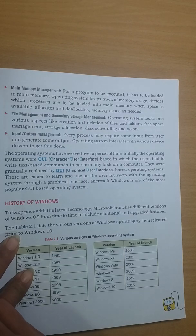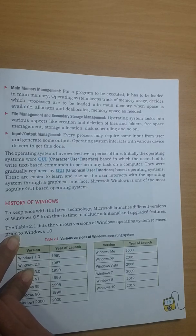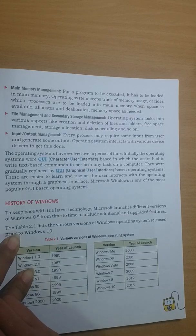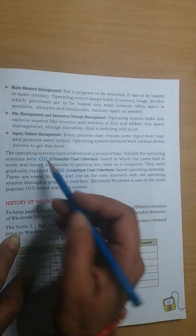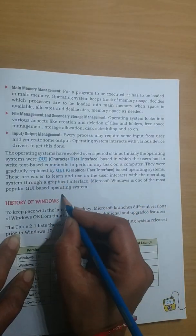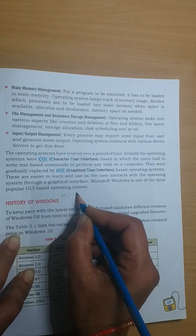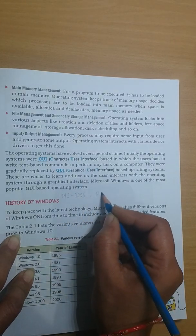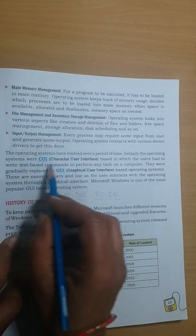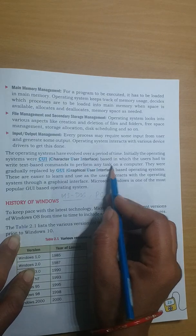In CUI, you must know the proper syntax and proper format of the commands — you have to type them all and then they get executed. Some examples of CUI operating systems are MS-DOS and PC-DOS, where you have to write the exact text commands and then they will execute.